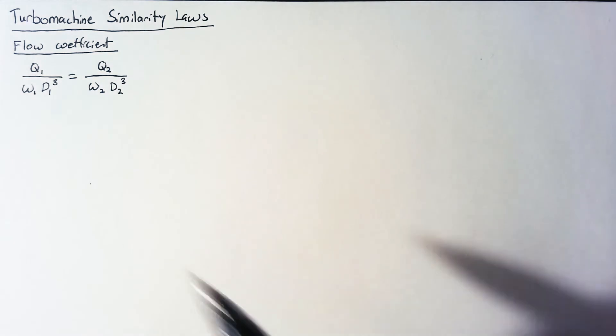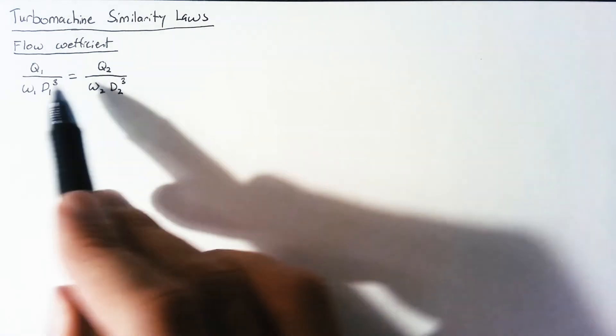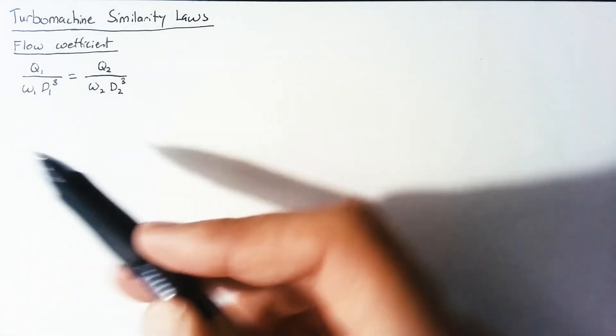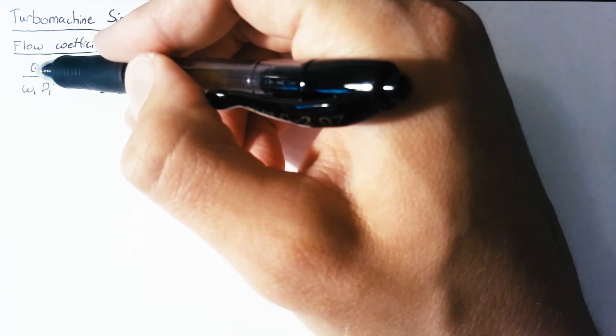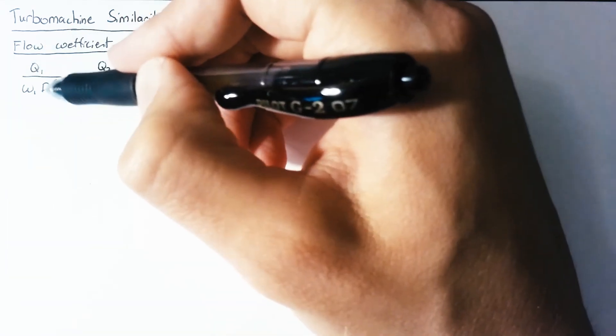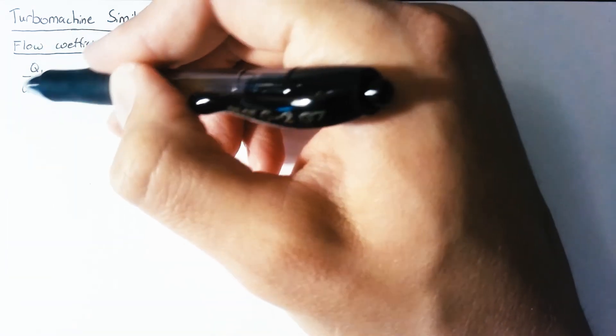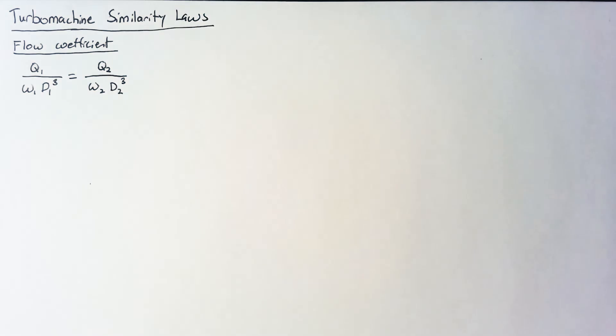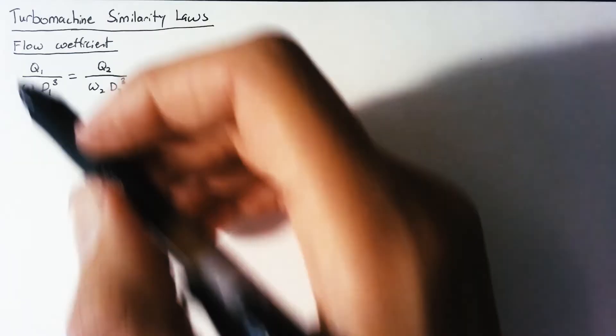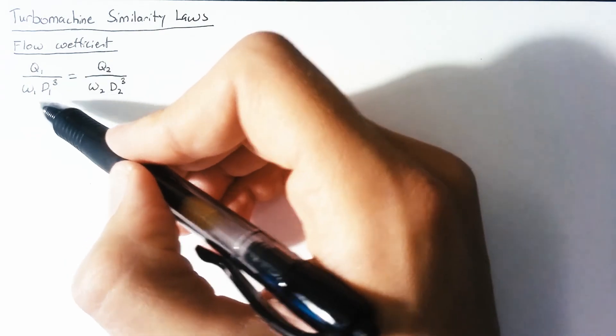Just a quick note, this is dimensionless. Our Q1 is meters cubed per second and then D1 of course is meters cubed and then omega is radians per second but radians is unitless. So that's just per second. We end up with meters cubed per second divided by meters cubed per second.